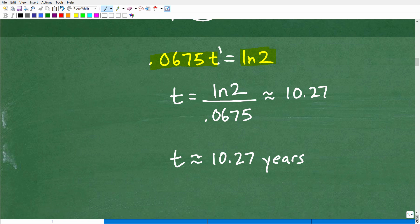So to solve for T, pretty easy here, just divide both sides of the equation by 0.0675, okay, 0.0675. You can see I've done all this work in advance. So our final answer will be T is equal to L-N, 2, divided by 0.0675.